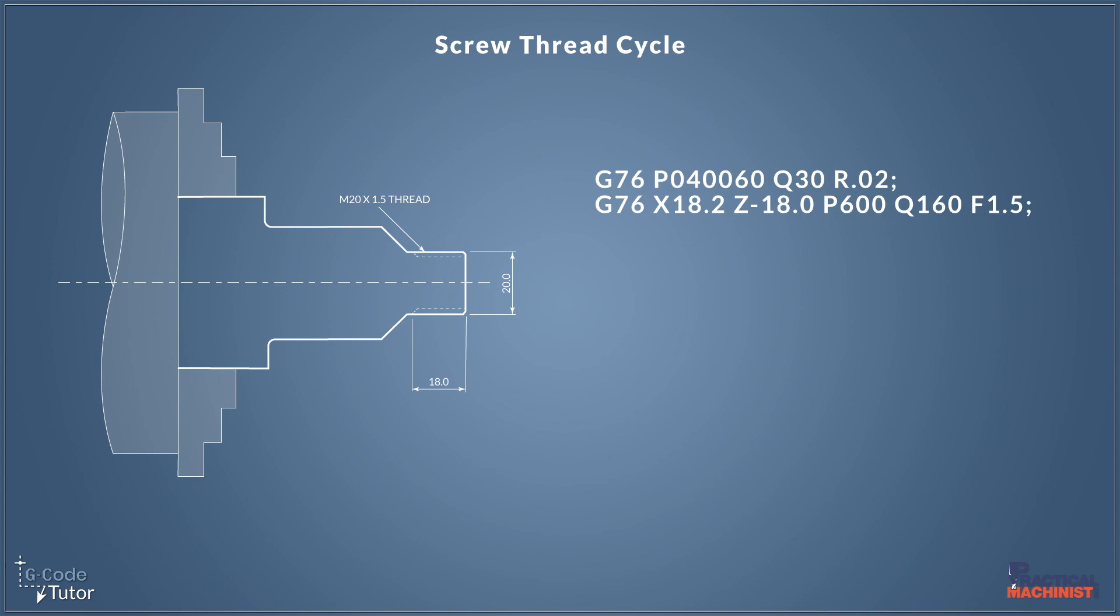By using repetitive cycles alongside canned cycles, we can really use a lot less code when we're writing our programs, especially on a CNC lathe. When we write G-code manually, we often code a lot more elegantly than a CAD-to-CAM system would output the code.